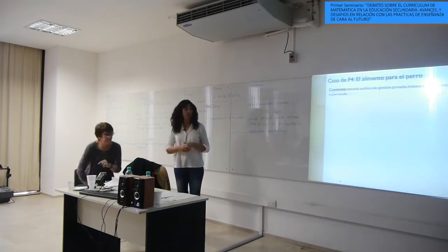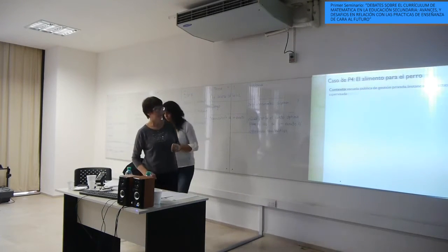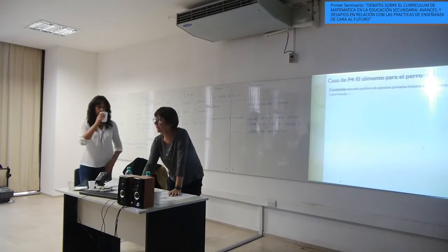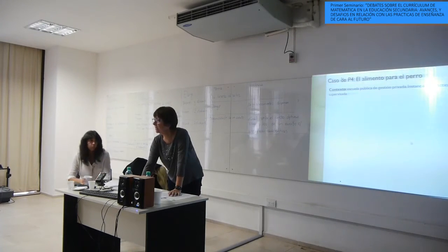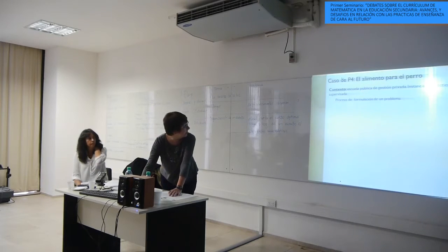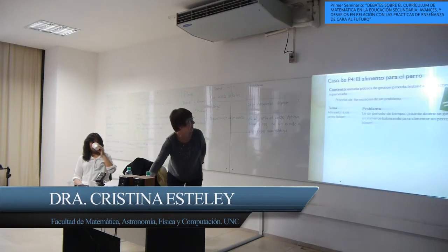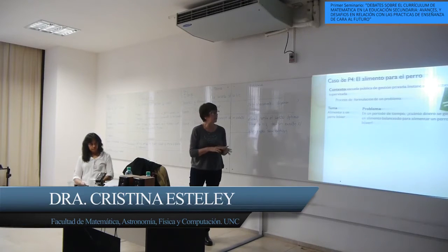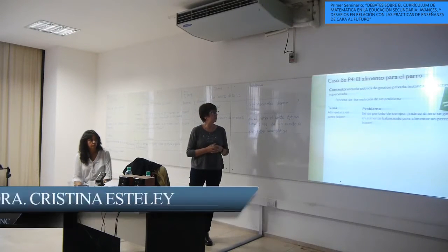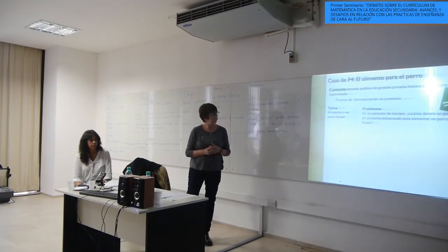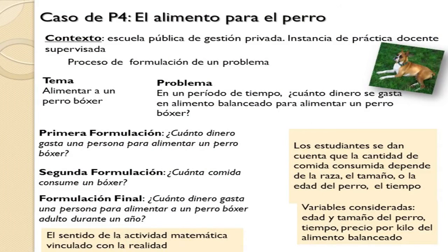El segundo ejemplo es el del alimento para perros. Lo elegimos precisamente porque el problema es sencillo y es fácil ver cómo se dio el proceso de reformulación. La temática elegida por el alumno era alimentar a un perro boxer. El problema que iba quedando era: en un periodo de tiempo, ¿cuánto dinero se gasta en alimento balanceado para alimentar a un perro boxer? La primera pregunta era simplemente: ¿cuánto dinero gasta una persona para alimentar a un perro boxer?